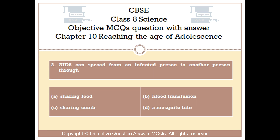Question number 2. AIDS can spread from an infected person to another person through: Option A sharing food. Option B blood transfusion. Option C sharing comb. Option D a mosquito bite.